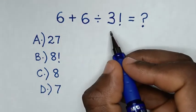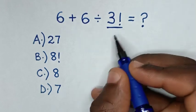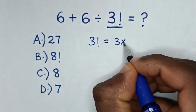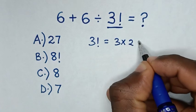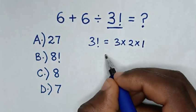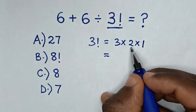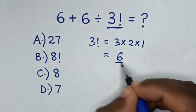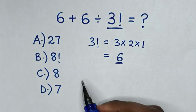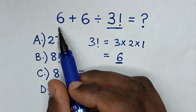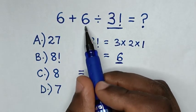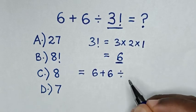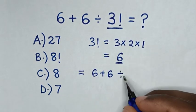First we'll start to deal with this 3 factorial, where 3 factorial is equal to 3 times 2 times 1. So it will be equal to 3 times 2 is 6, and 6 times 1 is 6. So we'll substitute this 6 into 3 factorial. Then it will be equal to 6 plus 6, divided by 3 factorial which is 6.